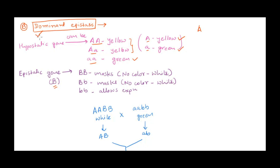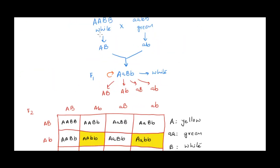We are talking about dominant epistasis, which means whenever the epistatic gene B is in dominant condition — homozygous or heterozygous dominant — it will mask the effect of the hypostatic gene A. When gene B is in homozygous recessive condition, it will not cause any problem to the hypostatic gene. Let's take an example and cross a white-color fruit and a green-color fruit.